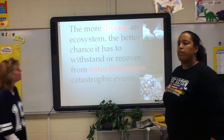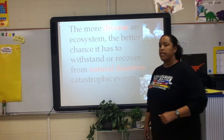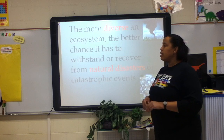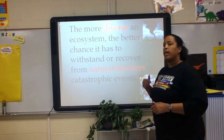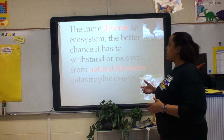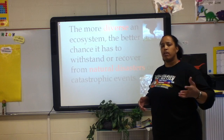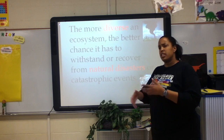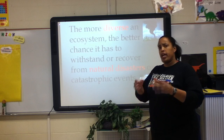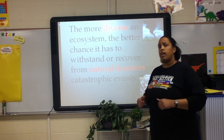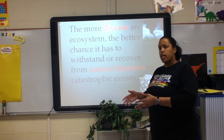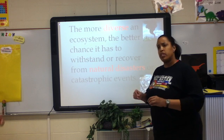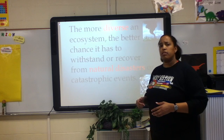The more diverse an ecosystem, the better the chance it has to withstand and recover from a natural disaster or catastrophic event. We've heard of Hurricane Katrina when it came in and wiped out the ecosystem — New Orleans is just now starting to regrow, with plant life and animal life coming back. But if we only have one type of plant, it's hard for it to rebuild. The more different types of plants and animals we have, the easier it is for the ecosystem to come back.